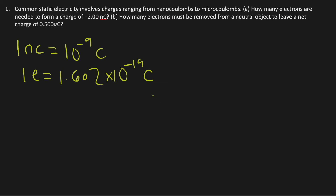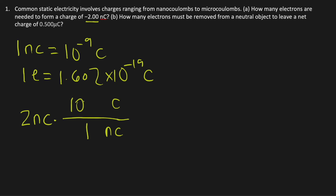Since we are looking for the number of electrons, we don't care about the negative sign, so we just take the absolute value of negative 2 nanocoulombs. So 2 nanocoulombs times — since you want coulombs, you need nanocoulombs on the bottom to cancel the unit out, and coulombs on the top. 1 nanocoulomb is equal to 10 to the negative 9th power coulombs.